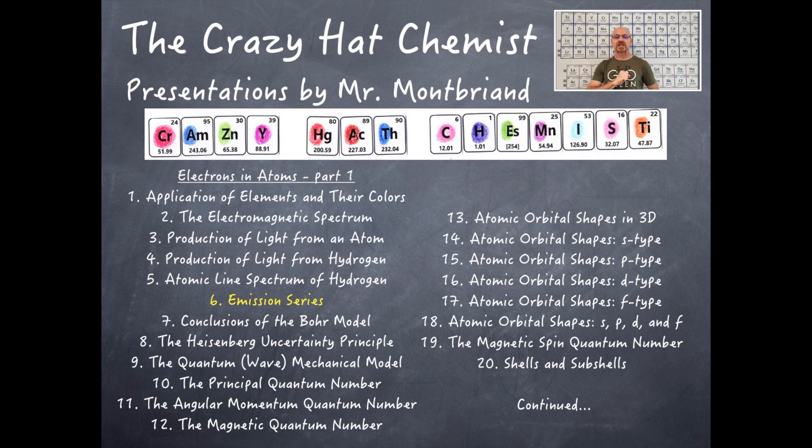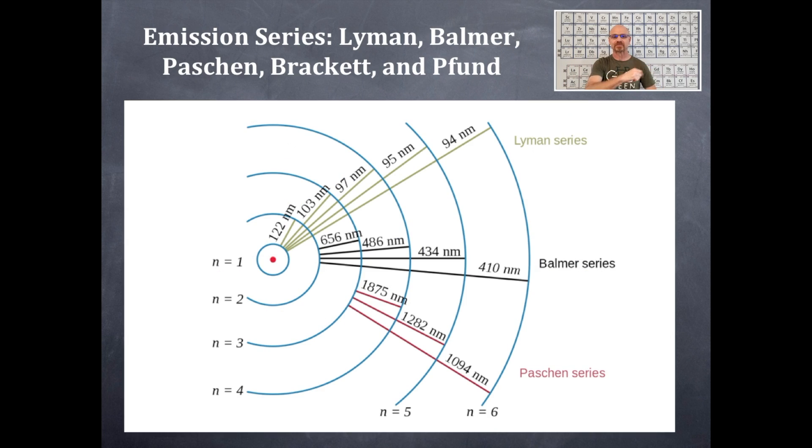Welcome to the Crazy Hat Chemist. So today we're going to be talking about the sixth video in electrons and atoms. So let's get started. The emission series: the Lyman, Balmer, Paschen, Brackett, and Pfund series. So I want you to look at that diagram that you see right before you there.